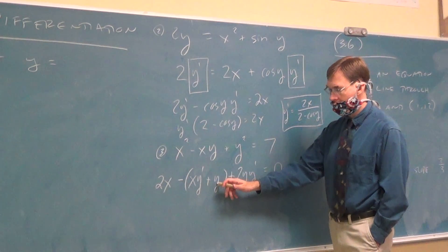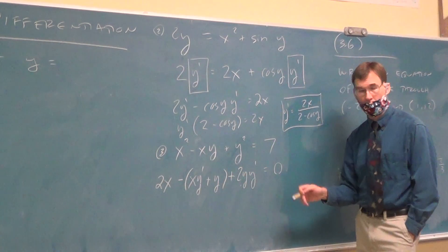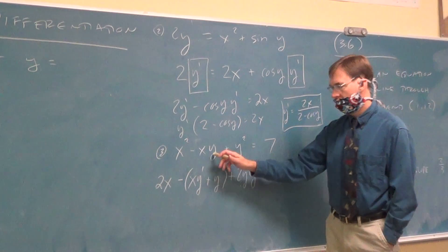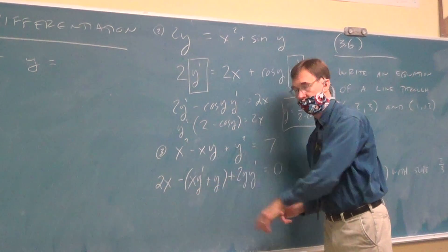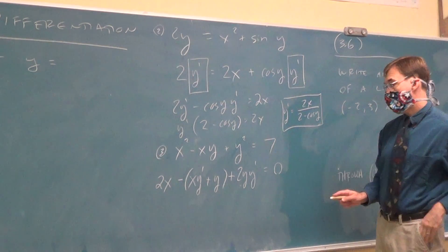You only leave the Y prime when you did Y's derivative. Just because you wrote the Y here doesn't mean you have to leave one of those Y primes. You only leave the Y prime when Y had its derivative done. So we did the derivative of a Y on that. When we did the product rule, only one of those pieces involved the derivative of a Y thing.